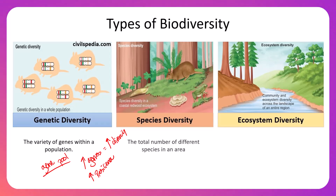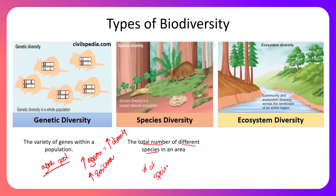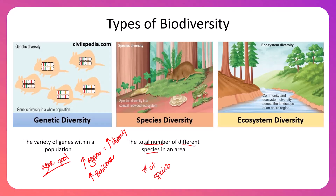Our next level is species diversity, which is probably the one you think of when you hear the term biodiversity. Species diversity refers to the total number of different species in an area. When we go out into nature, define an area, and do a physical count — say 11 species of plants, seven insect species, two secondary consumers, and so on — we are measuring species diversity at that level.